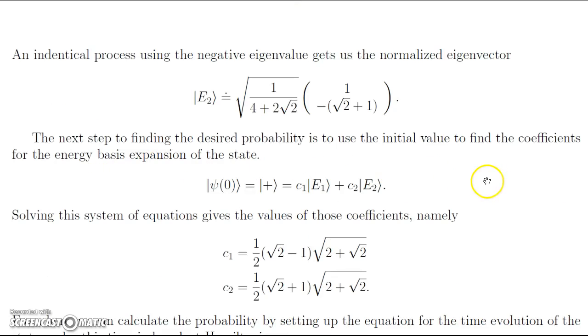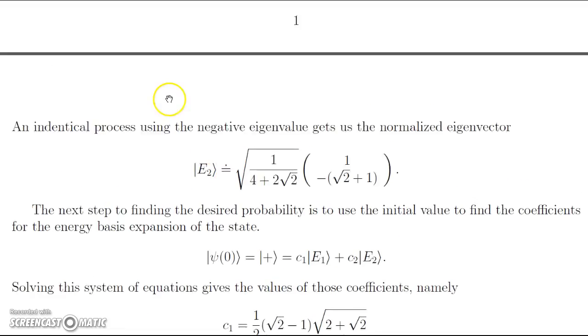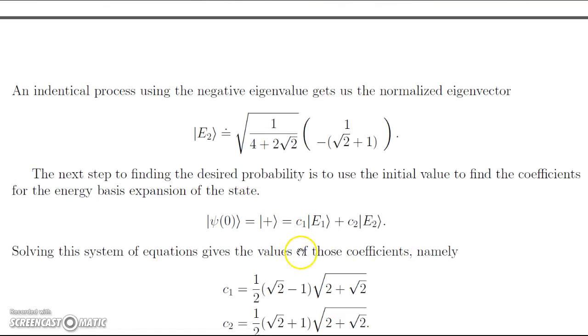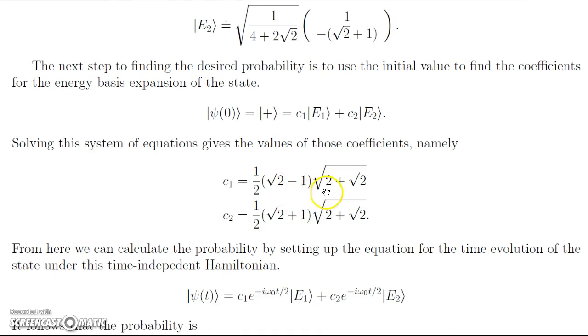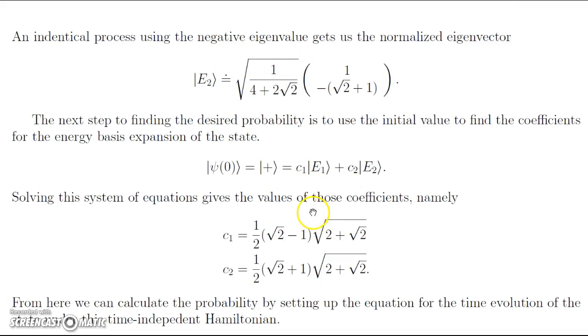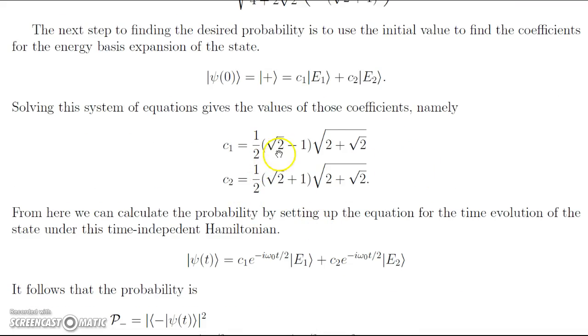The next step to finding the desired probability is we can use the initial value that we are given, the ψ(0). Here we know it's spin up. So we have C_1 times our E_1 state plus C_2 times our E_2 state. We can solve this system by substituting the representations here back in, and we can solve for C_1 and C_2. These are a little messy due to the fact that these eigenvectors are messy, so I give the C_1 and C_2 here, which is done by solving that system.